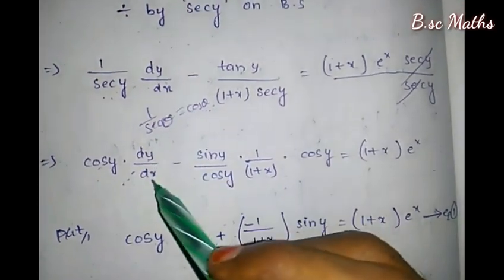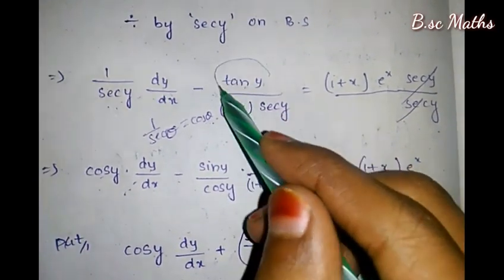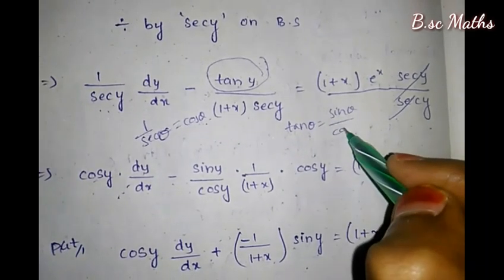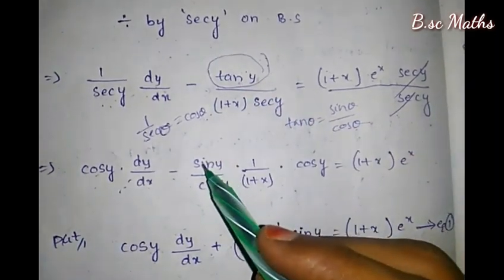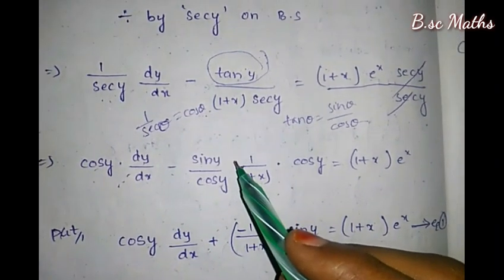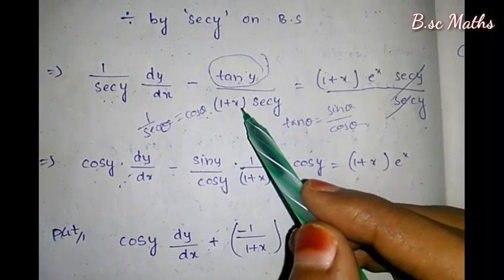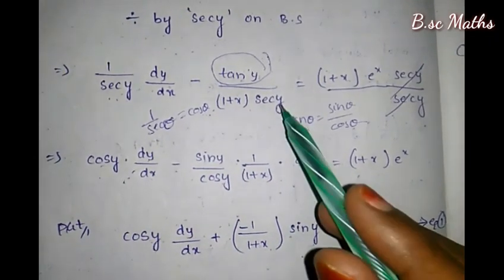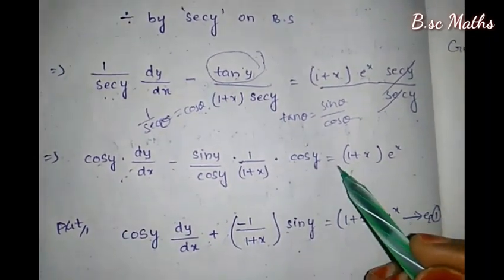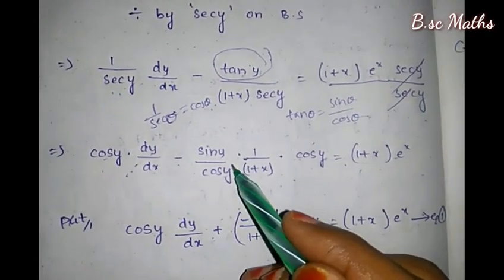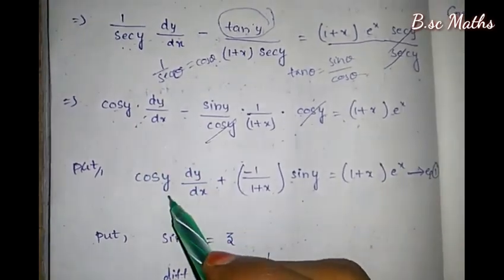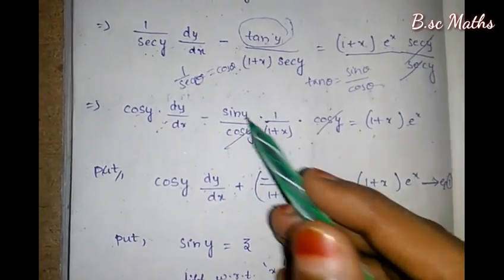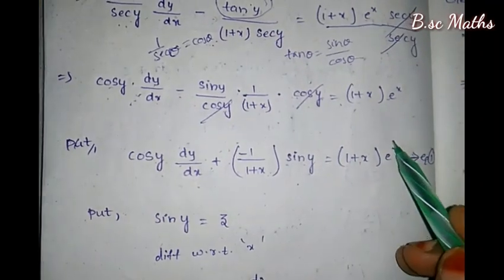Here we see dy/dx minus tan(y), and tan(y) equals sin(y)/cos(y). Also 1/sec(y) equals cos(y). So multiplying through, we get cos(y) times dy/dx minus 1/(1+x) times sin(y) equals (1+x)·e^x. Here cos(y) and cos(y) cancel on the right side, giving this as equation number 1.